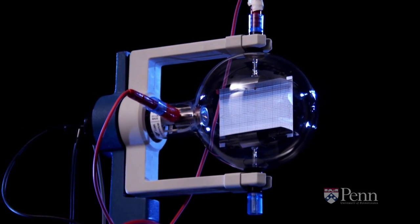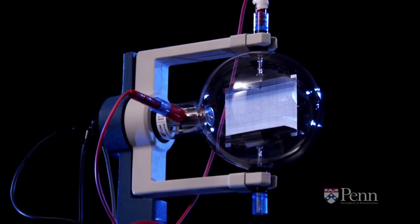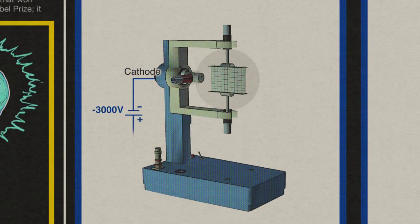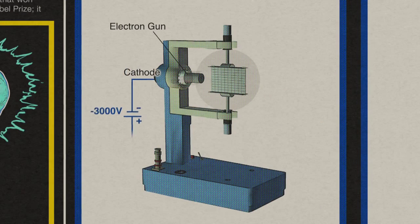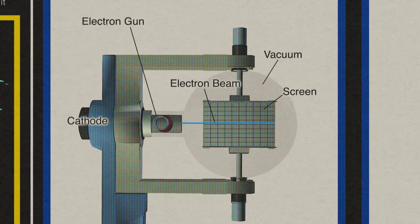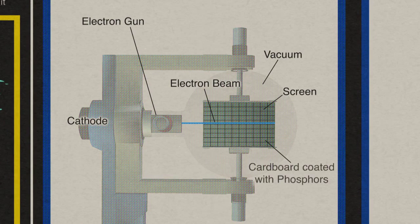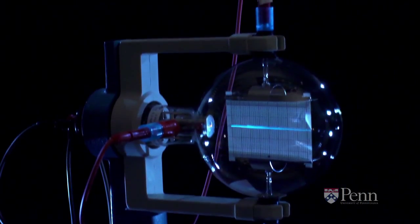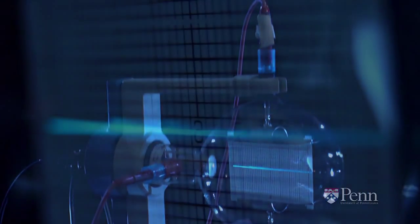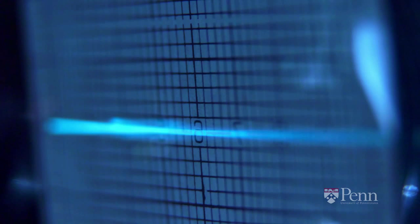The cathode ray tube is a glass envelope. On one end of it, you can see the metallic electron gun. At the other end, we've got a grid on a piece of cardboard with phosphors on it. When the electrons hit those phosphors, they'll glow blue. The blue glow tells us where they are and how they're behaving as we change the situation inside the tube.